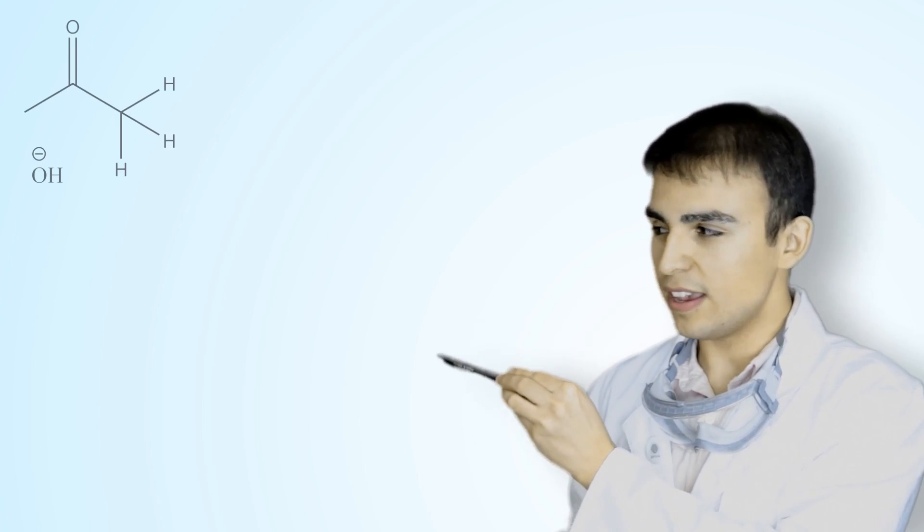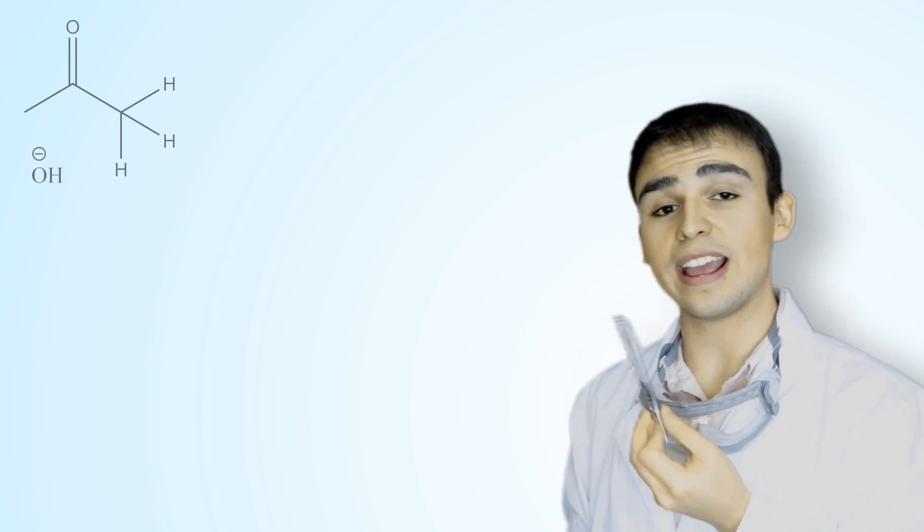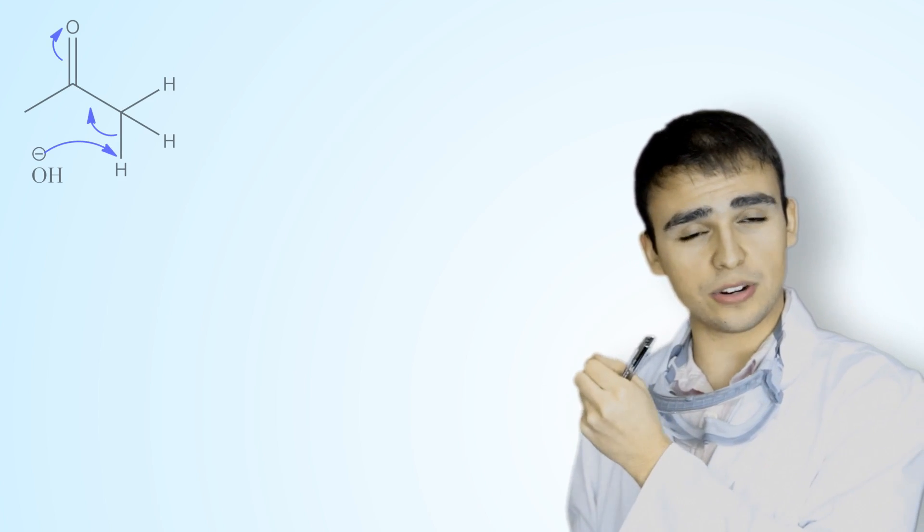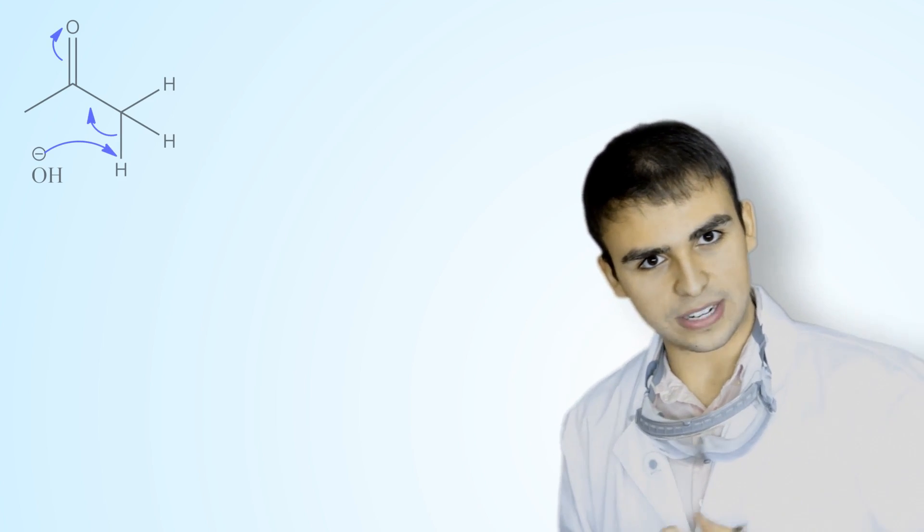we had our acetone molecule. Those alpha hydrogens are slightly acidic. For reference, the pKa is about 19. So the strong base will abstract one of those alpha hydrogens, leaving those two electrons in the sigma bond to move electron density up, forming an enolate intermediate.